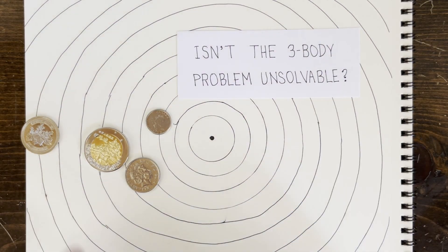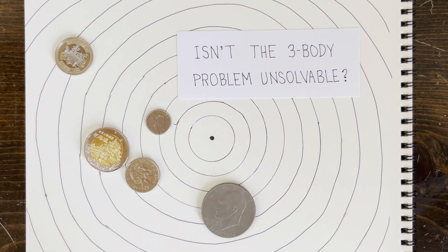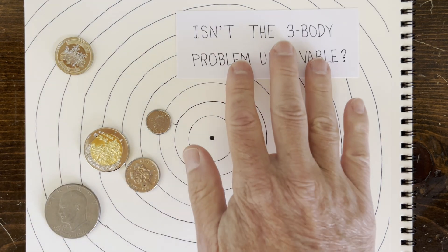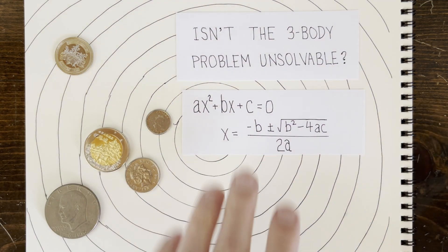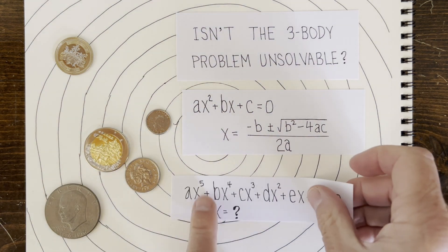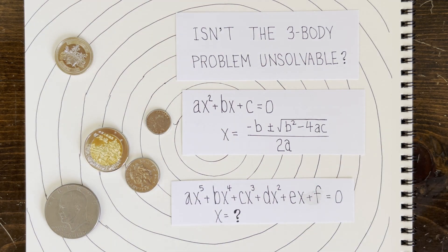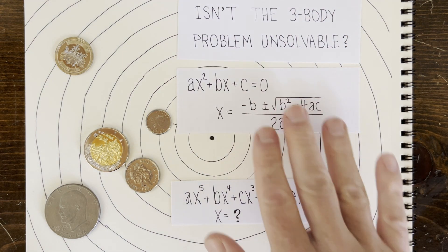It means nobody knows a closed-form solution for specifying the positions of the 3 bodies at time t. Just like the quadratic equation has a closed form, but the quintic doesn't. So what does closed-form mean? I mean, if you allow square roots, what else is allowed? That part's not too clear.